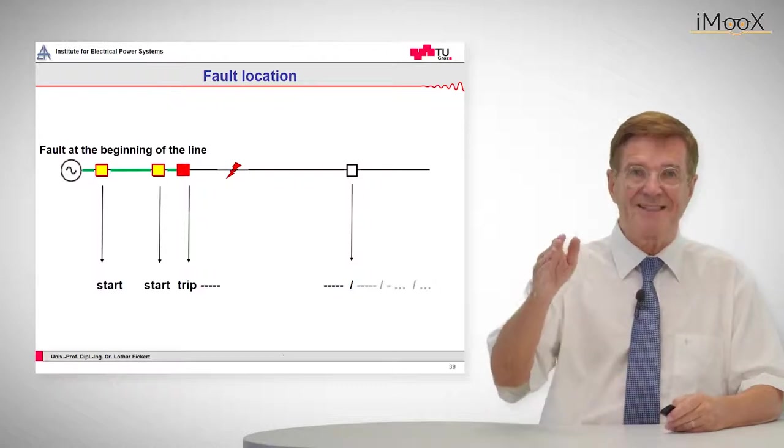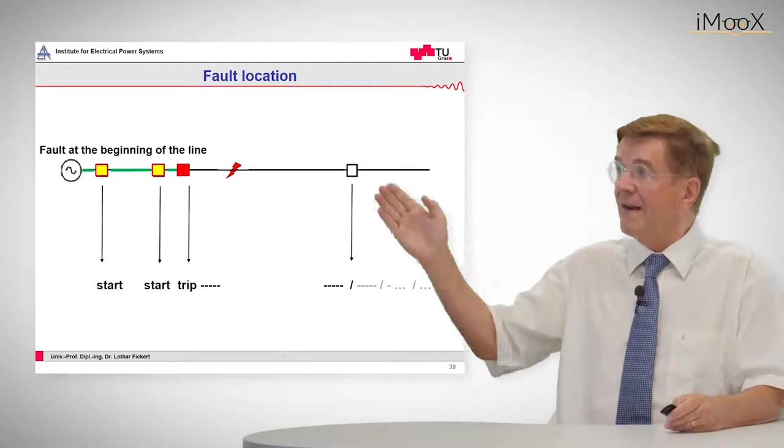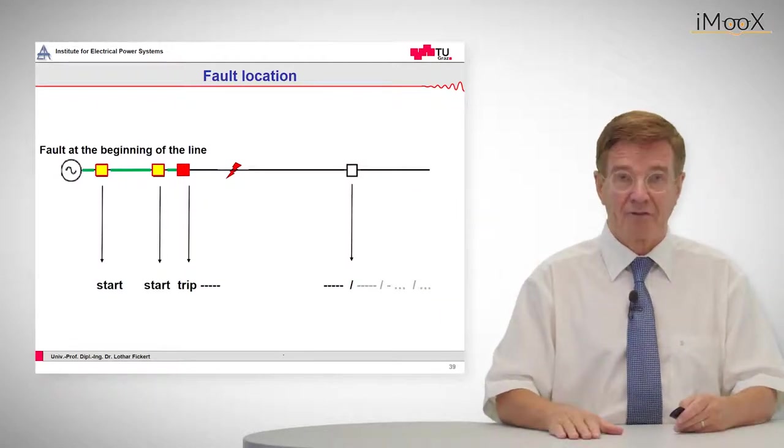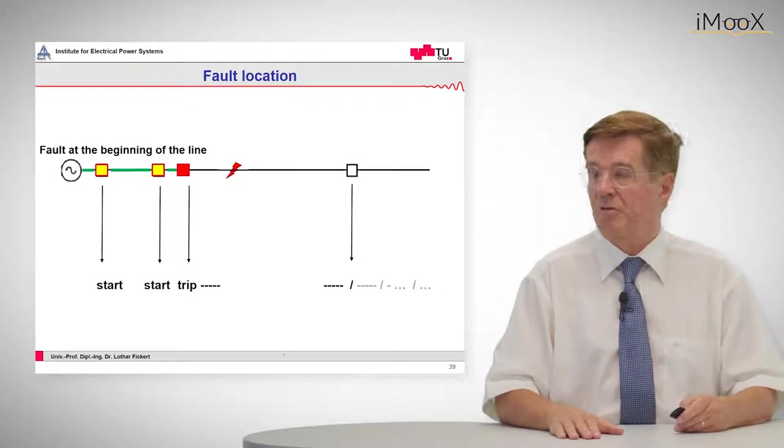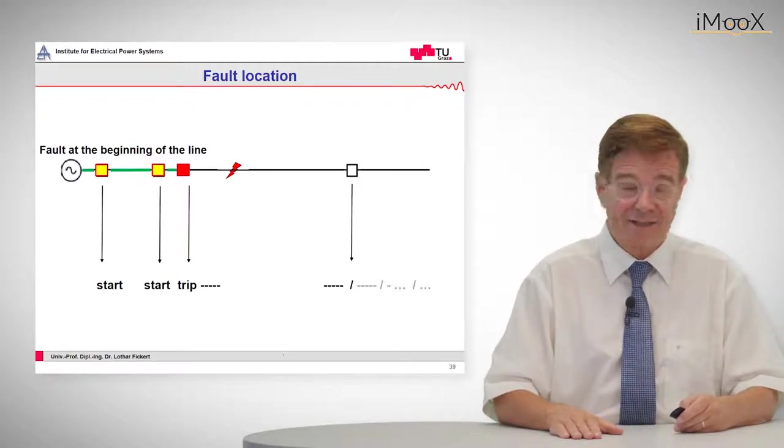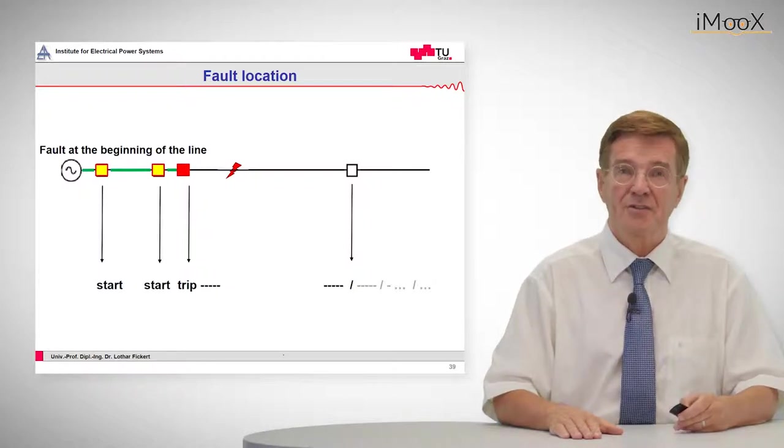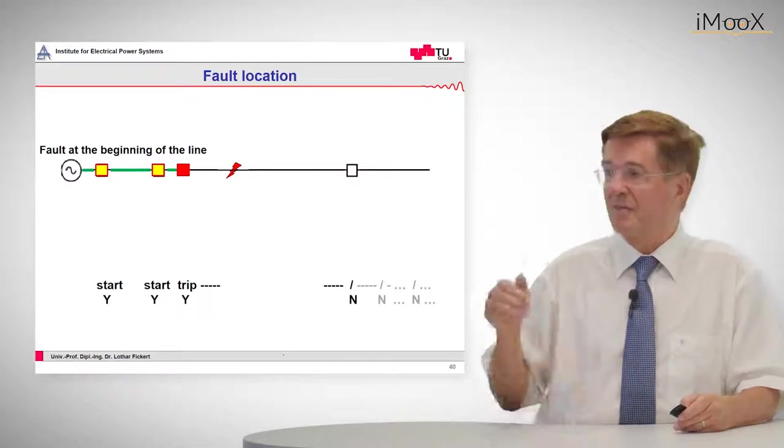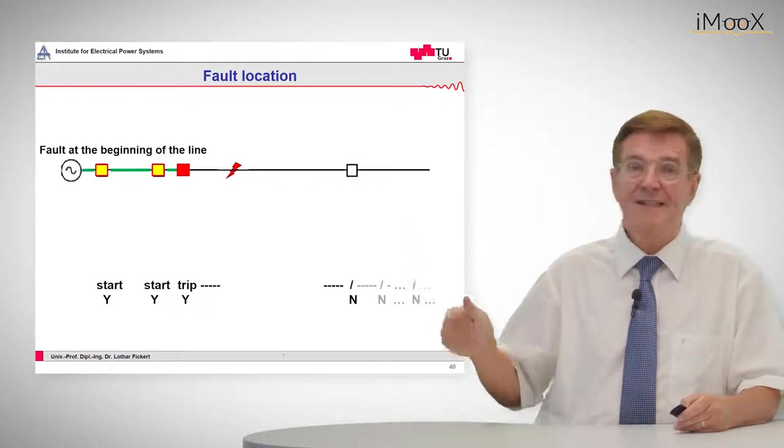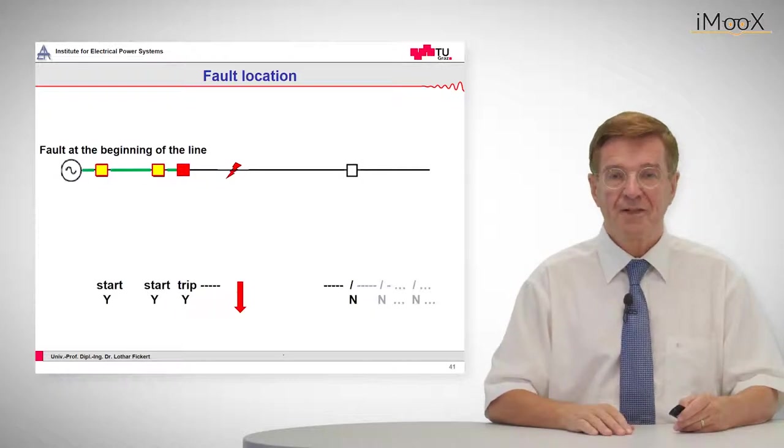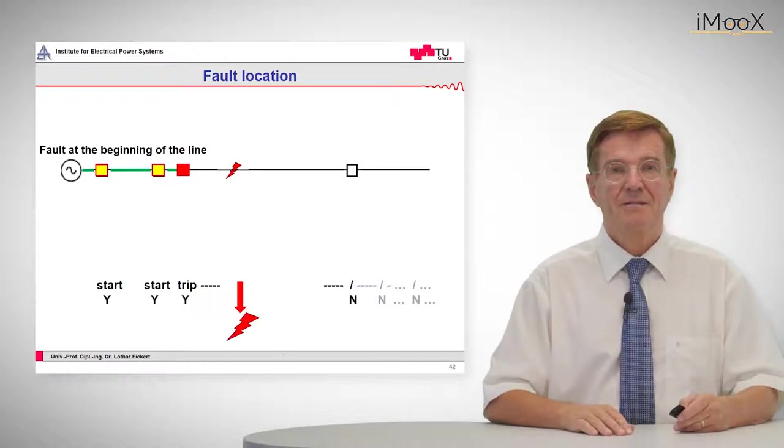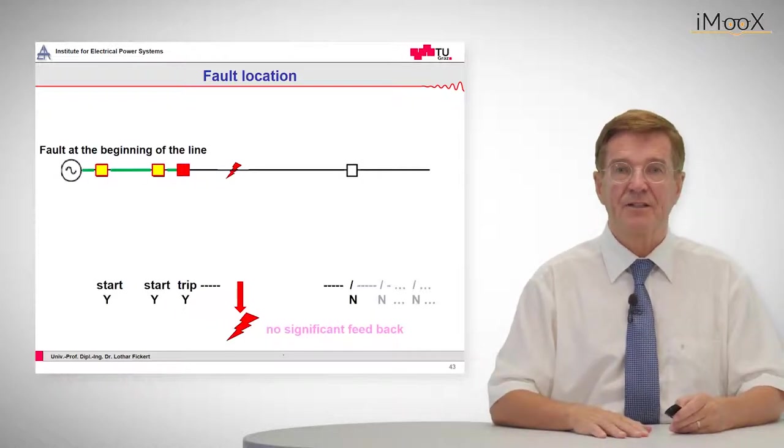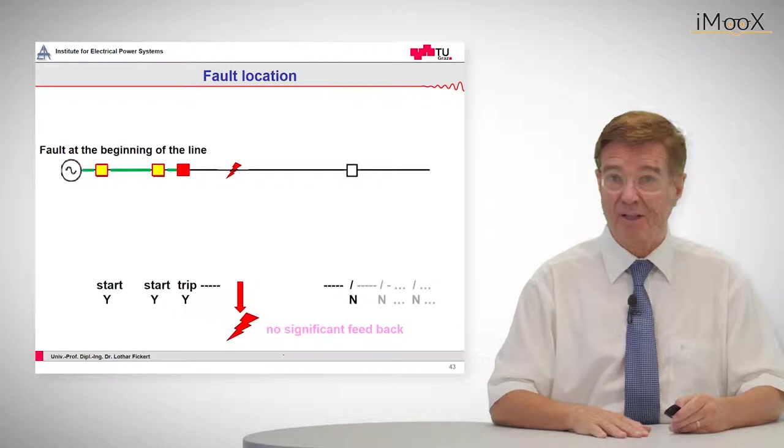So this is our example and we see the reaction of those protection relays. We have a start, a start and a trip. And behind that trip there is no reaction at all. The reason is after a fault there is no voltage on the line anymore, no fault current, nothing and therefore this relay will not react. So we can see we have the sequence of yes, yes, yes and no. And in between we have this fault. So fault location can be carried out under one precondition that there is no significant feedback current.